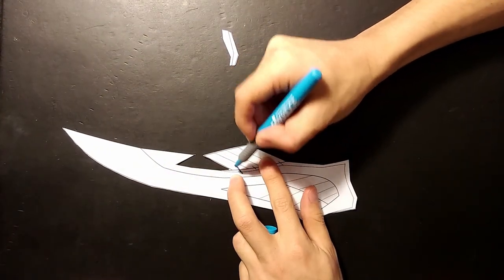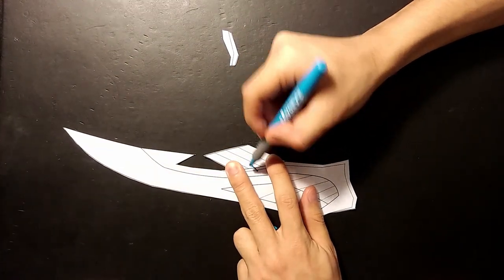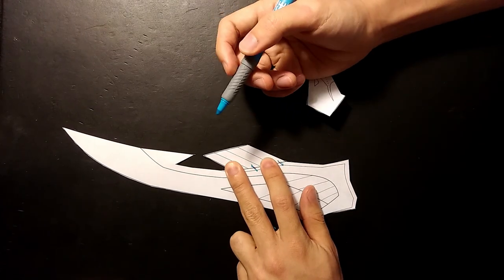Before you cut off this back section, we'll want to put a couple little lines here. That way we can line up the two pieces later.